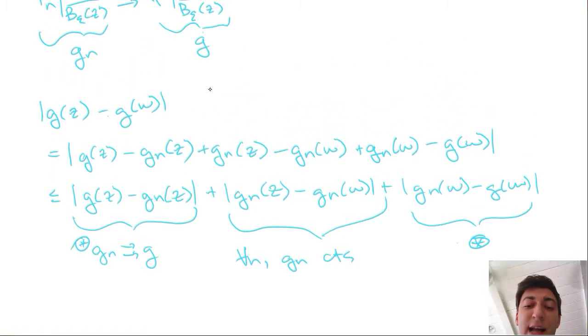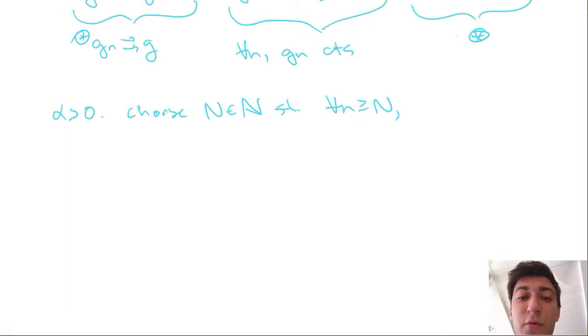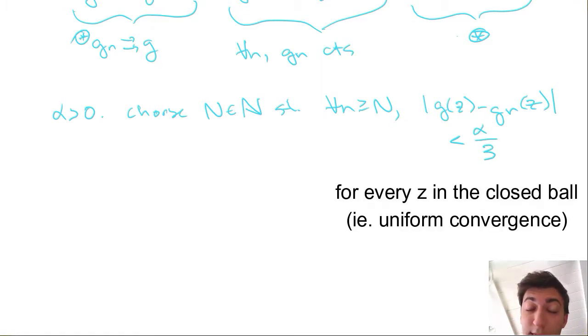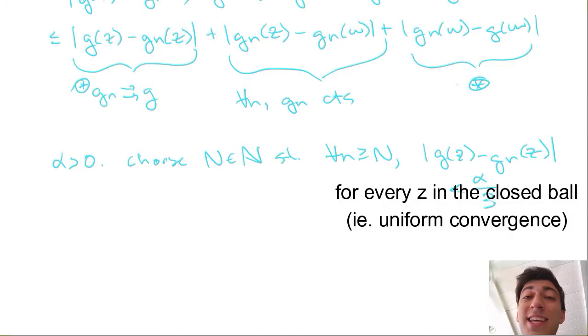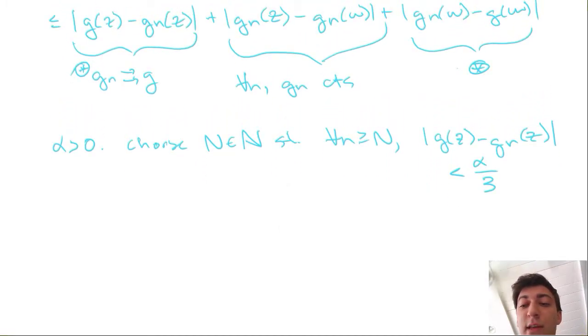We can set an alpha greater than zero, some quantity, right? And then we can choose N, capital N, in the natural numbers, such that whenever we're larger than that N, and this is our uniform convergence of these Gn's, so whenever we're larger than that N, this quantity is bounded above by alpha over three. So the reason I chose that is because we have three terms here. So if each of these terms is less than alpha over three, then the whole sum is less than alpha. And that's what we want to show in a proof by continuity. So we've chosen some arbitrary alpha. We pick an N far long enough so that we get this result.